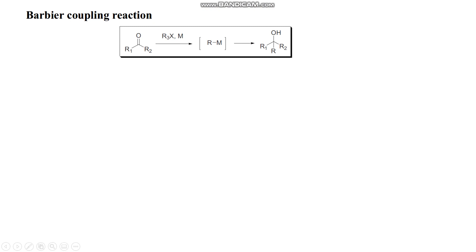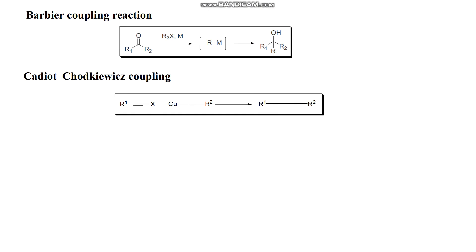This could be primary, secondary, or tertiary alcohol. The second example is the Cadiot-Chodkiewicz coupling, which is a reaction between alkynyl alkyl compounds with alkynyl copper reagents to form an acetylene compound.